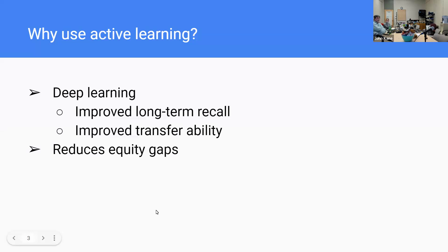One of the most important reasons to consider active learning is that it reduces equity gaps. Active learning empirically benefits all students, but it especially benefits students who tend to be left behind — first-generation students and students from historically underrepresented groups. It closes the gaps in general when people are actively engaged in class sessions.